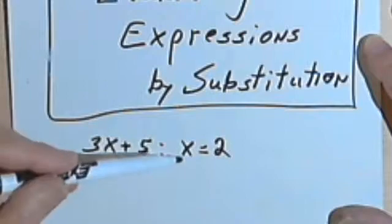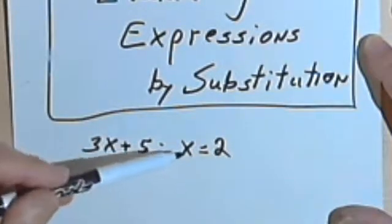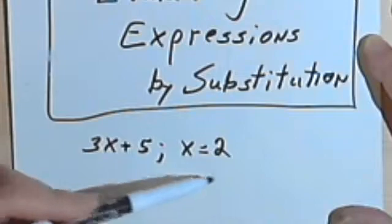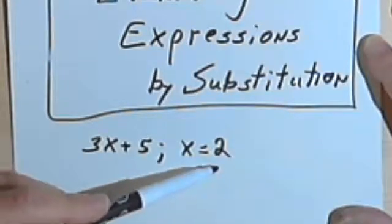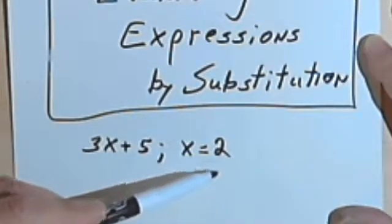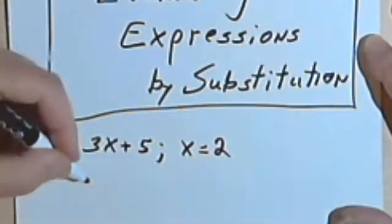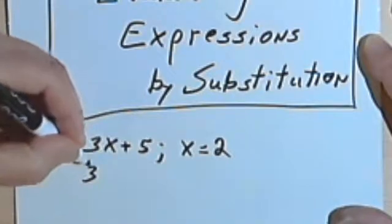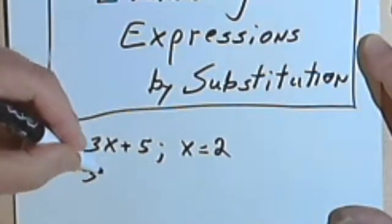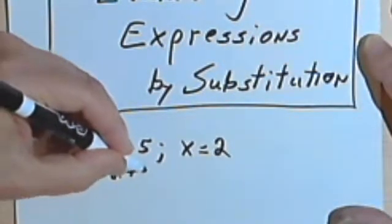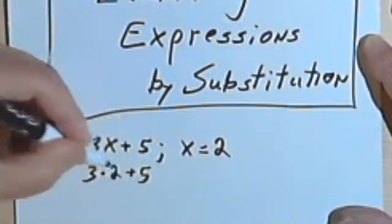So all we do is everywhere where we see an x — in this case there's only one x — we plug in what x equals, which is 2. So instead of writing 3 times x, we're going to write 3 times 2, plus 5.